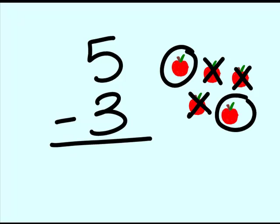1, 2. Those 2 apples are what is left after you take 3 from 5. So, 5 minus 3 is 2.